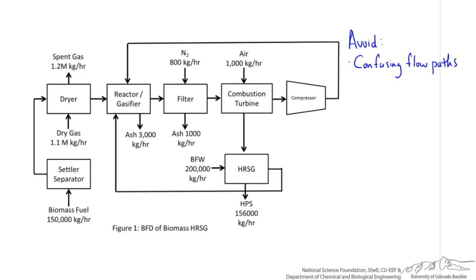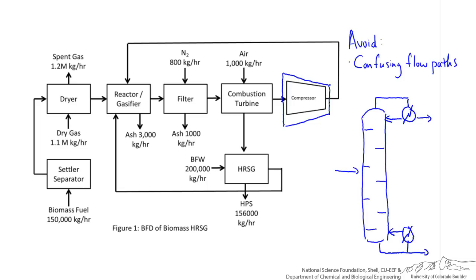Did you notice that not all of the units are represented as blocks? The compressor has a distinct compressor-like wedge shape, which I actually see quite a bit on block flow diagrams. This is generally considered okay, but you should not see on a block flow diagram — and it's a mistake I see students making all the time — is that everything starts off well drawing reactors as blocks, but when there's a distillation column, you feel compelled to draw a very detailed sketch with trays and a reflux and reboiler unit. Avoid doing this. You just need to use squares and rectangles.